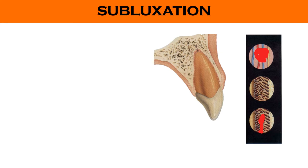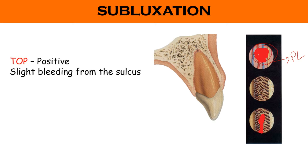In case the impact force is more, it results in subluxation. In this case, more of the periodontal ligament fibers get ruptured, and because of that more blood gets accumulated. Therefore when we percuss this tooth we observe tenderness on percussion, and there is also some bleeding from the gingival sulcus.